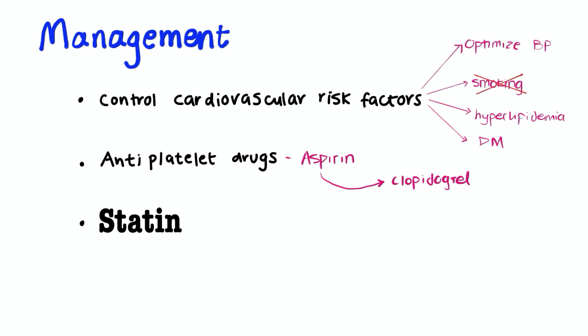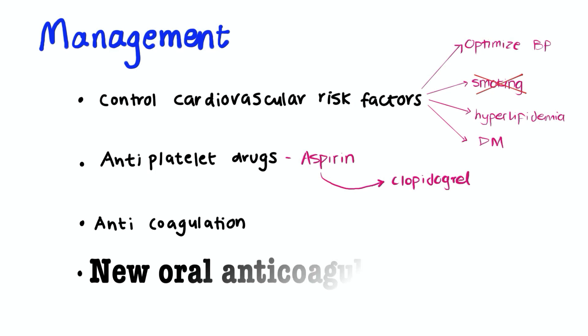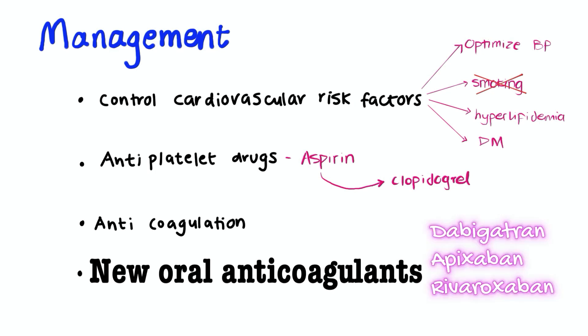If this patient had a cardio embolism as a result of atrial fibrillation, these patients need long-term anticoagulation with warfarin to reduce the risk of systemic embolization. They can also use new oral anticoagulants like dabigatran, apixaban and rivaroxaban.